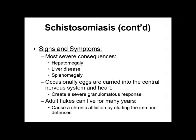The signs and symptoms associated with infection by this pathogen are hepatomegaly, liver disease, and splenomegaly — that is, enlargement of the liver, enlargement of the spleen, and a diseased state of the liver. Occasionally, eggs are carried through the bloodstream to the central nervous system and the heart, resulting in granulomatous responses — granulomas forming within those tissues. Adult flukes can live for many years in the human host, causing chronic afflictions that elude immune defenses.